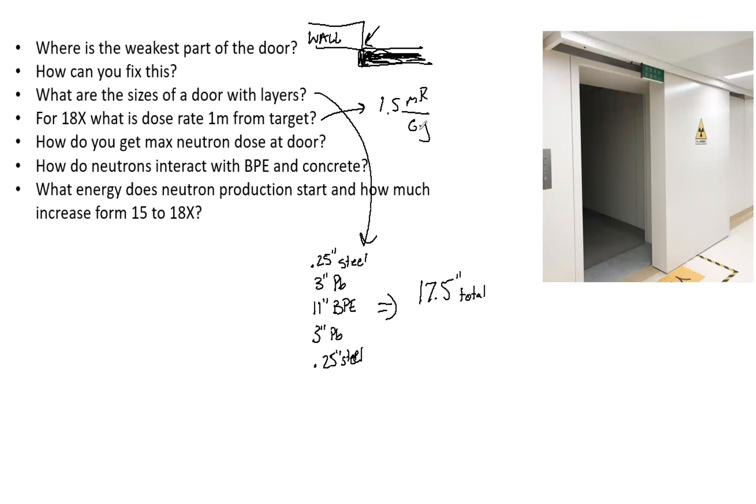How would you get max neutron dose at the door? When you're doing shielding for a new linear accelerator, you want to see at the door what is the worst case scenario for getting neutron dose and ensure you aren't going to exceed that limit. What you want to do is close the jaws and put the gantry head toward the door. That is going to make the absolute most amount of neutrons at the maze wall and the door.